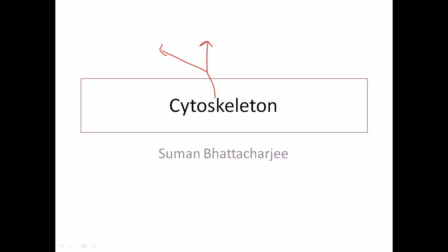So we have three branches: actin, intermediate filament, and microtubules. We will discuss these three things in future slides using different animations as well as still slides. We can see that microtubules are important during cell division because microtubules help to hold the chromosomes together via kinetochore attachment.